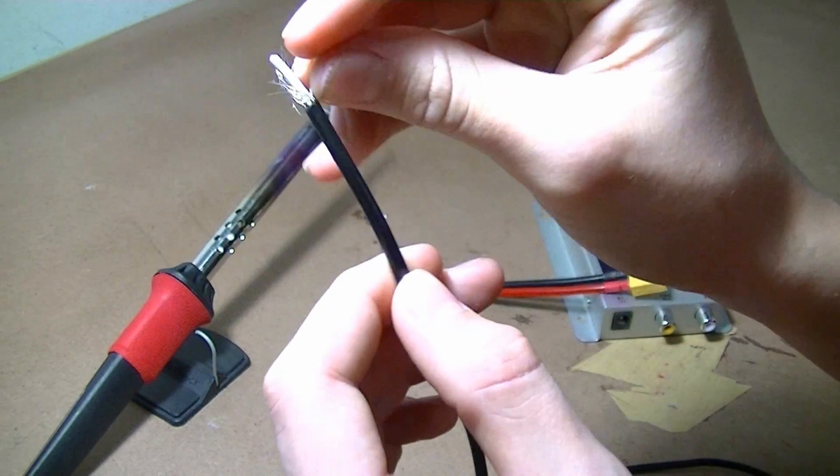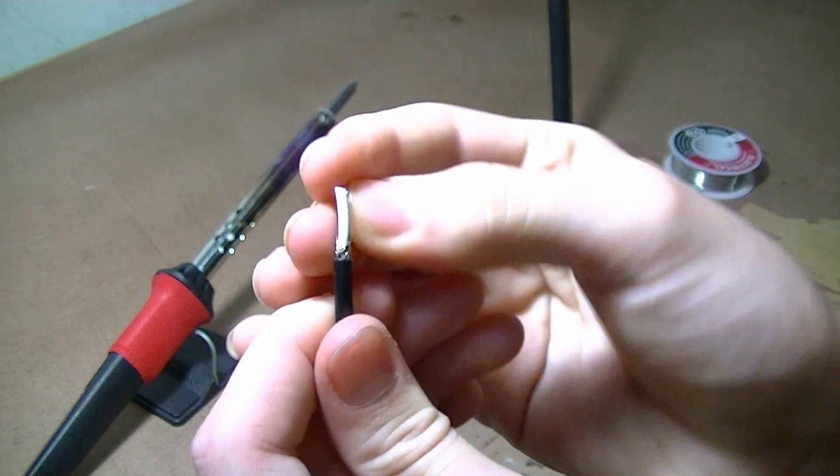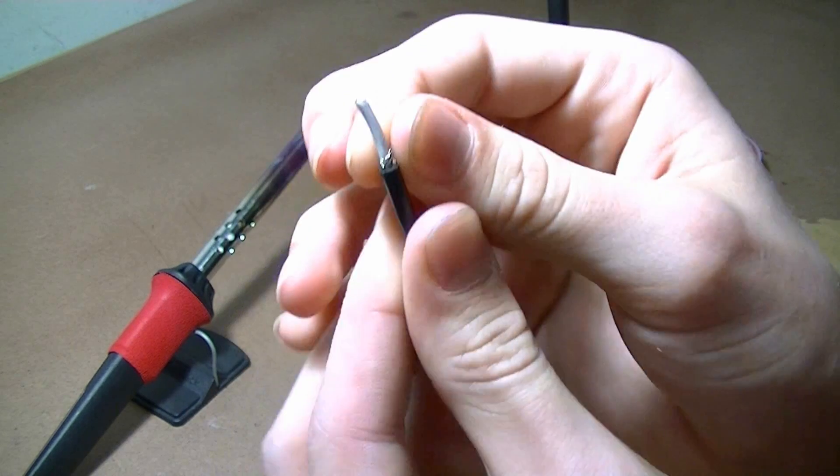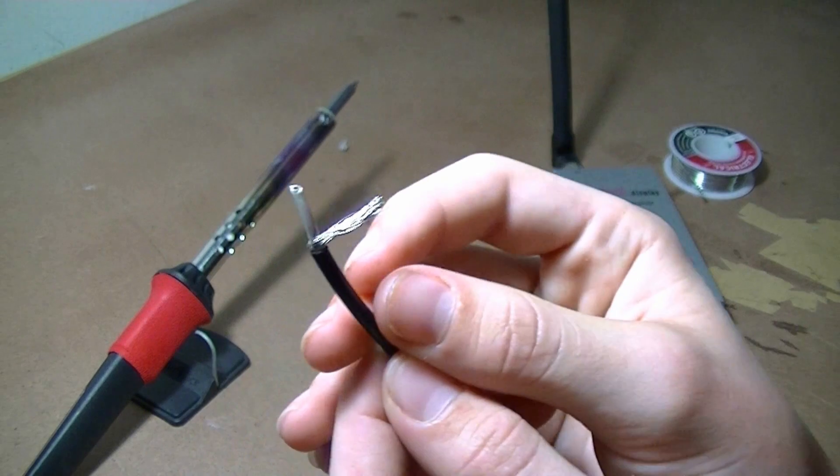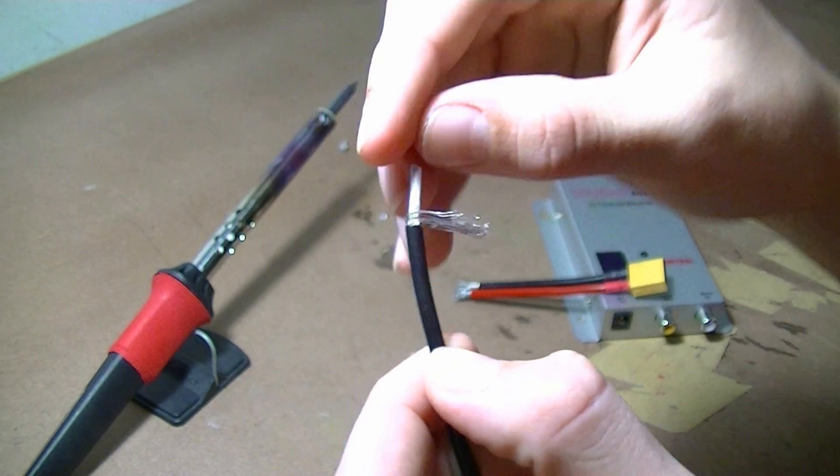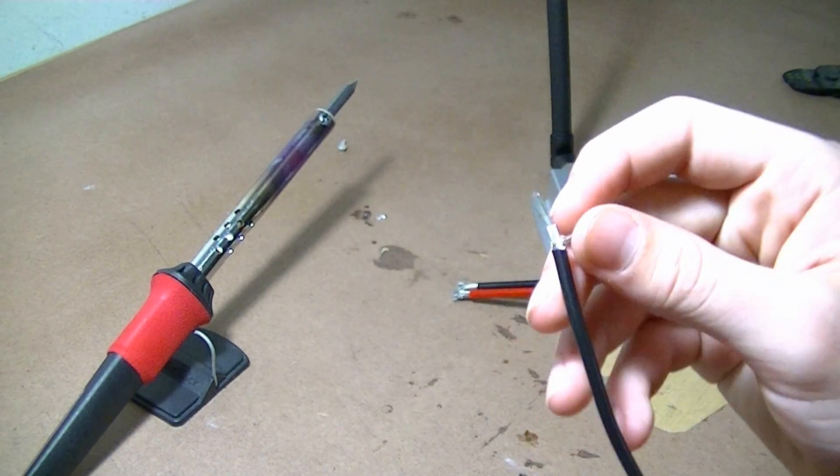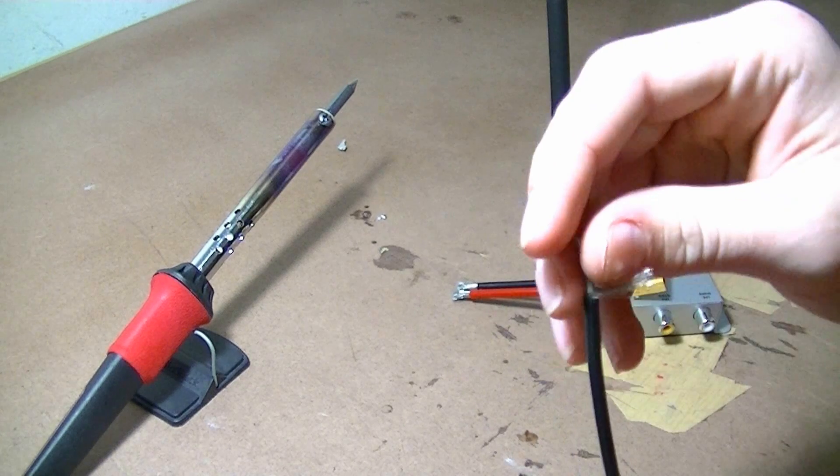The insulated wire is your positive and the little wires are your negative. Strip the positive about halfway down so you can solder it but it doesn't come in contact with the negative. Now you can put your heat shrink on, but I already did that.